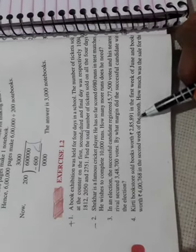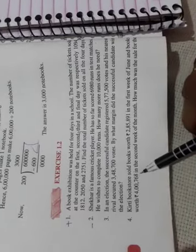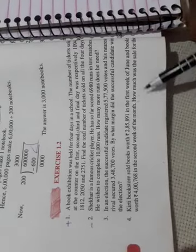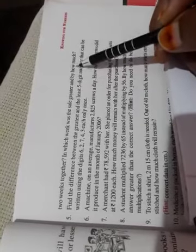Next, number 4. Kirti Bookstore sold books worth Rs. 285,891 in the first week of June and books worth Rs. 4,768 in the second week of the month. How much was the sale for the two weeks together? In which week was the sale greater and by how much?